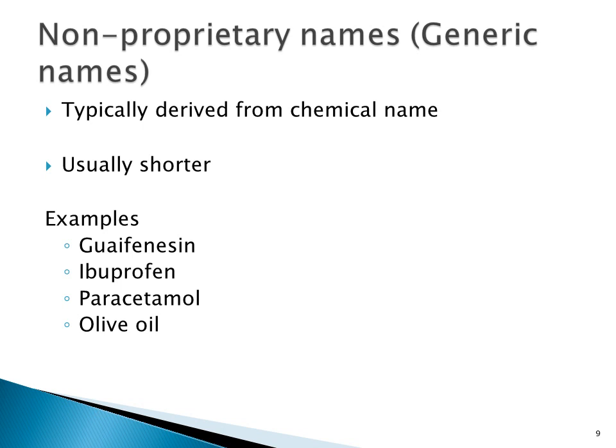For non-proprietary names, also known as generic names, these names are typically derived from the chemical names and are usually shorter. Examples include guaifenesin, ibuprofen, paracetamol, and olive oil. You can imagine having to say N-acetyl-P-aminophenol every time instead of paracetamol, or RS-2-(4-(2-methylpropyl)phenyl)propanoic acid instead of ibuprofen — the name is really tongue-twisting, so it is better to just say ibuprofen.